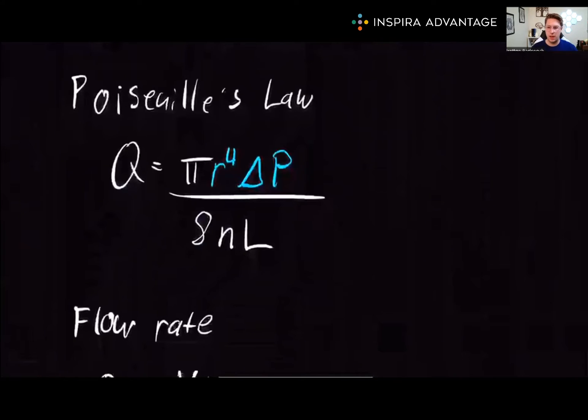Next, we have Poiseuille's Law, which determines the rate of laminar flow. The key takeaway here is the relationship between radius and pressure gradient. It's inversely proportional to the fourth power. For example, if we double the radius of the pipe, the flow rate increases by 16 times, not just double.